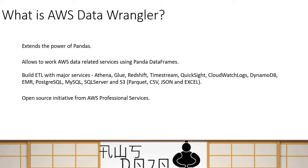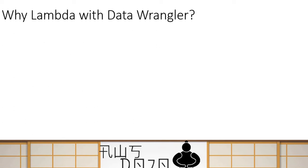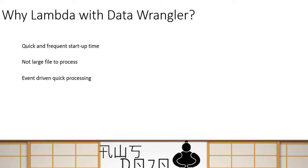Today we are going to talk about how you can use AWS Data Wrangler with AWS Lambda. So why would you want to use Lambda with Data Wrangler? There are certain specific requirements when it does make sense to do a data transformation job inside a Lambda function. The biggest driving factor I have seen is quick and frequent startup time. For instance, I have seen an ETL pipeline where someone needs to call a data source every 30 seconds or every one minute to fetch data, do a little transformation, and then write into a data lake or S3 bucket or DynamoDB.